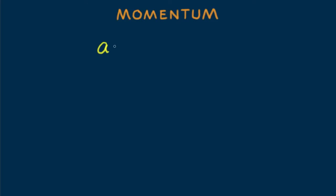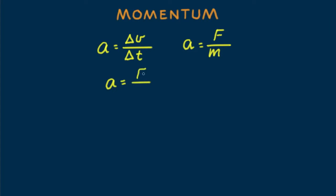Let's see what results when we equate a couple of familiar equations. Recall that acceleration equals delta v over delta t. Also recall that acceleration is equal to f over m — Newton's second law.